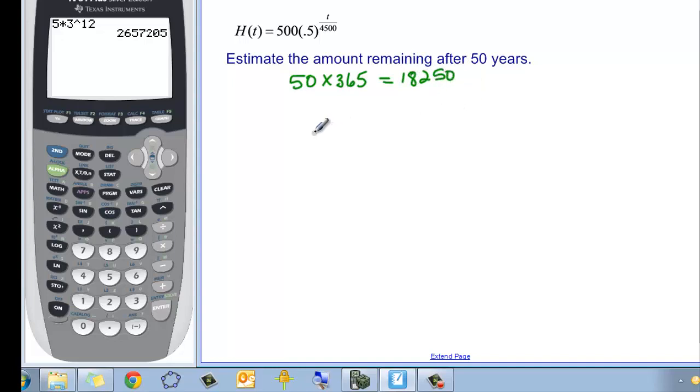So now we're doing h of 18,250, because it's a time, is equal to our 500 original, times the half-life, which we're calling 0.5, raised to the 18,250 over 4,500.